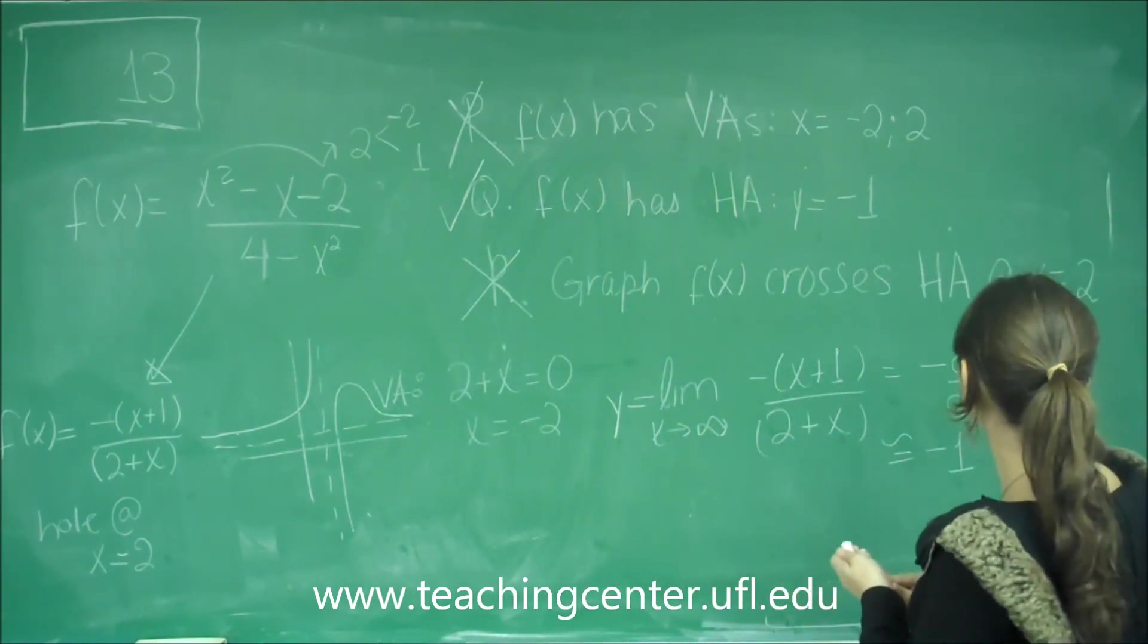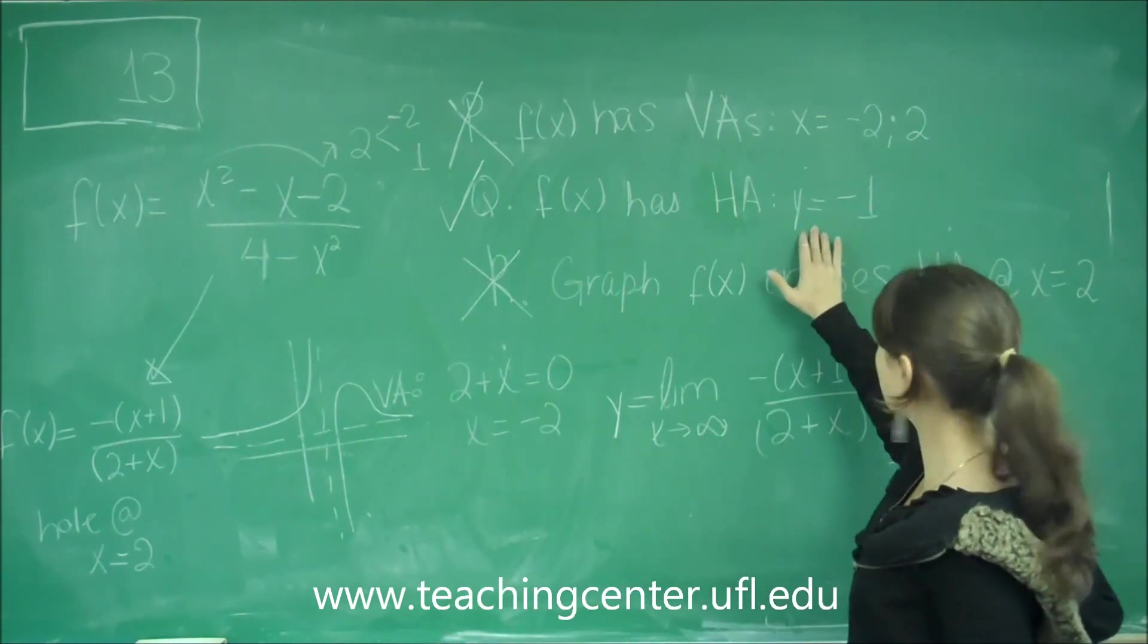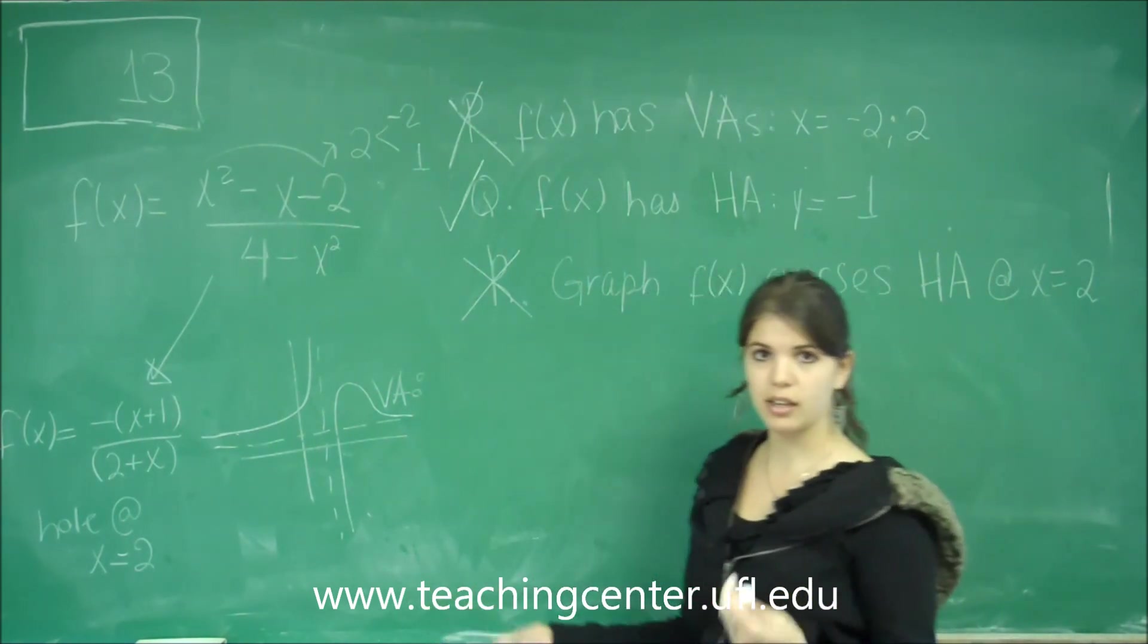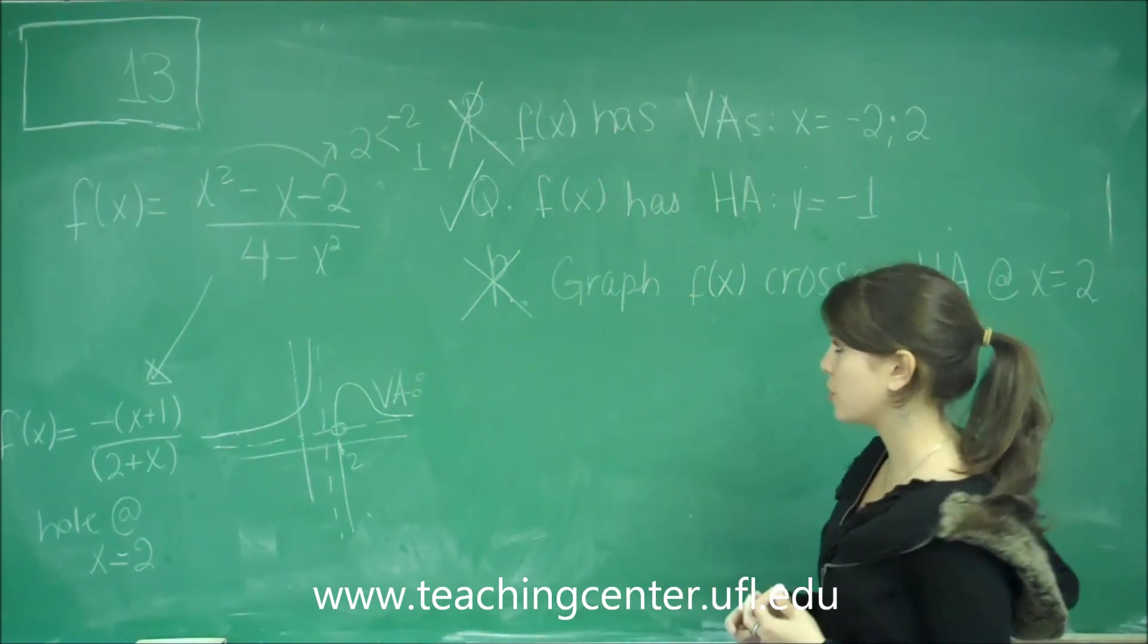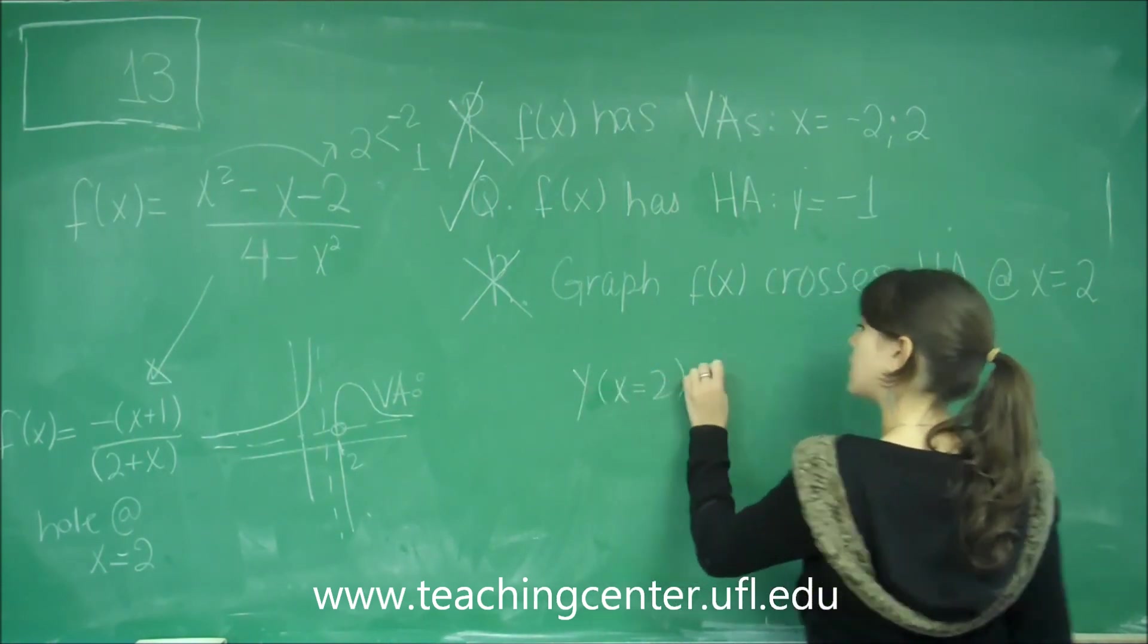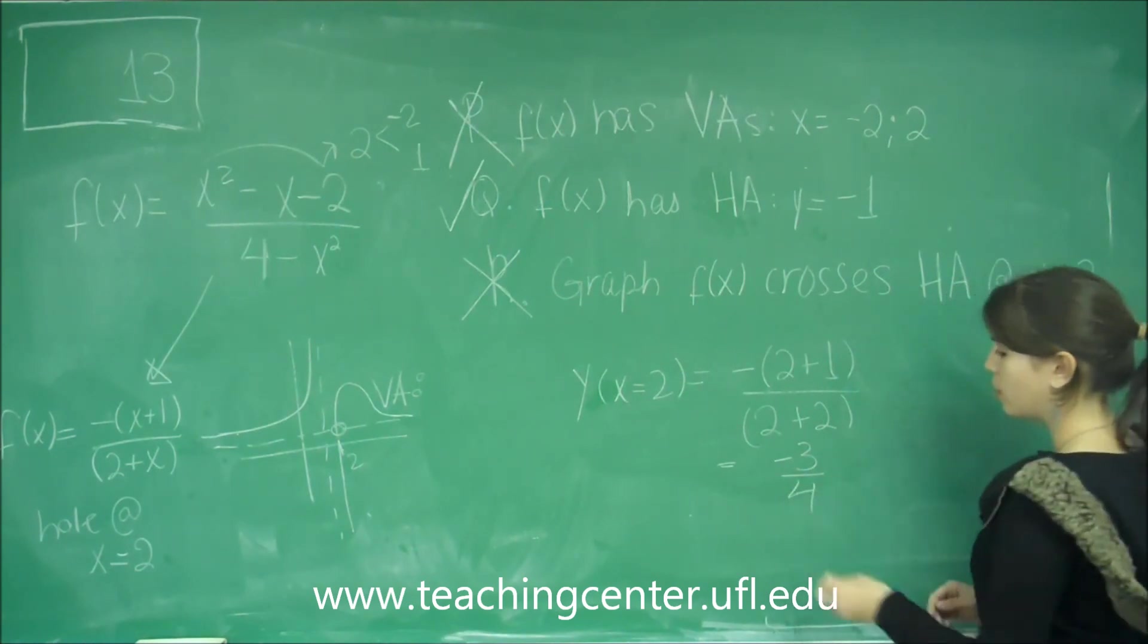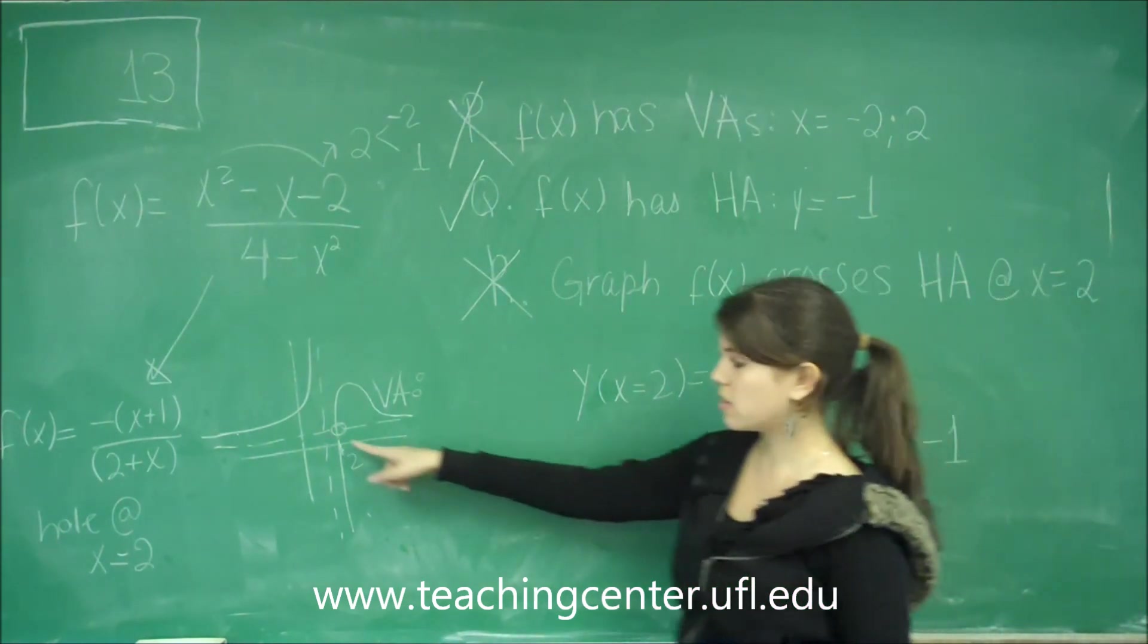And then something else you could do is plug in the 2 into there, and see what y you get, and to see if that y is the same, y equals negative 1. So let's do that for a second, just to make sure. So let's see what's happening at x equals 2. Is it crossing the horizontal asymptote? So over there, we have y at x equals 2. It's going to be negative 2 plus 1 over 2 plus 2. We're just putting 2 for x. And so that gives me a negative 3 over 4, which is not equal to my horizontal asymptote. So it's actually not even close to being around this area.